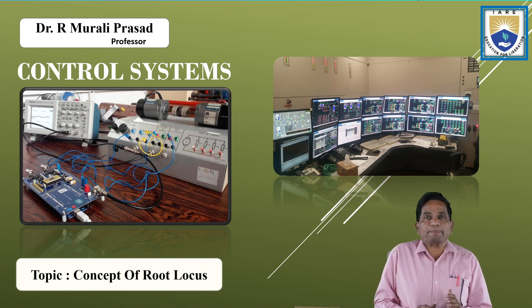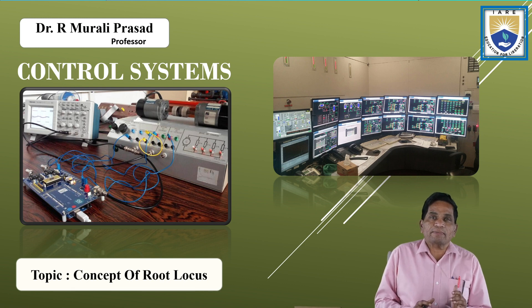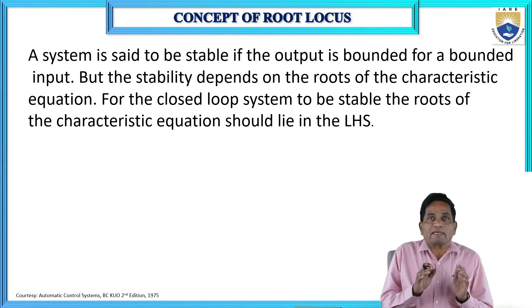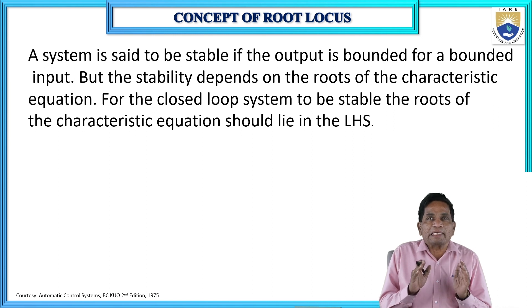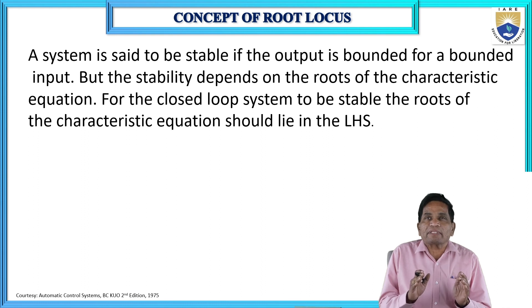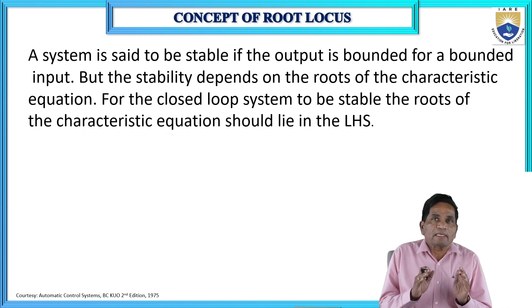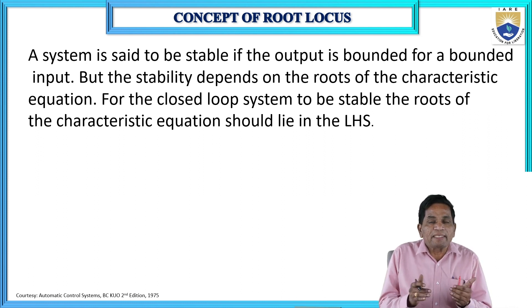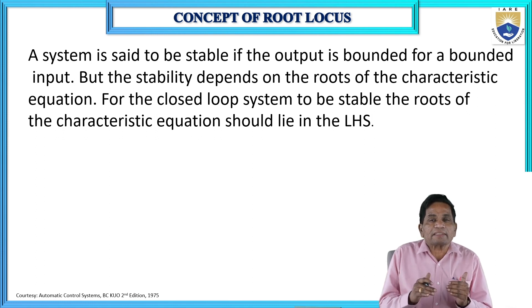Today the topic is the concept of root locus. I have already explained the concept of stability. You know very well when a system is said to be stable — stability depends on the location of the closed loop poles. Stability does not depend upon the zeros; it depends only on the poles.